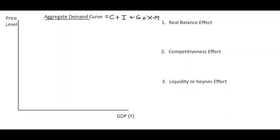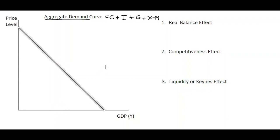So all expenditure in the economy we represent by these five different symbols. Now in order to examine aggregate demand itself, we have to look at a downward sloping line. Aggregate demand in the economy shows the total quantity of goods and services demanded at any given price. Starting at a relatively high price on this curve, at point A the price level is relatively high at P1 and aggregate demand — the spending in the economy — is quite low, so we'll put that in as GDP1.